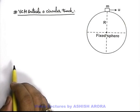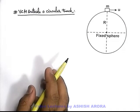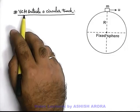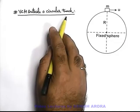Let us discuss one more concept related to vertical circular motion, that is vertical circular motion outside a circular track.